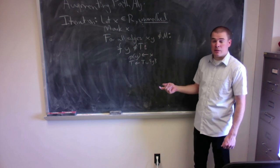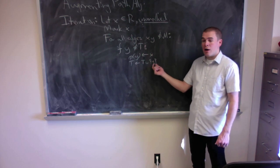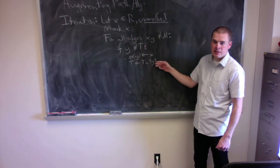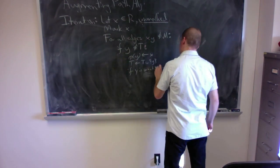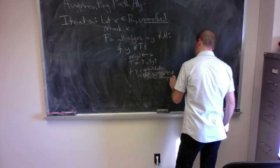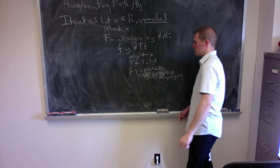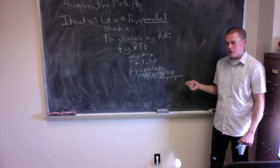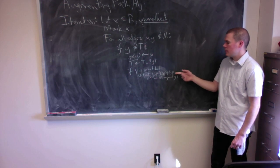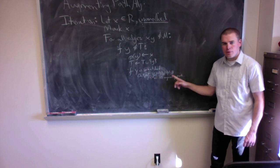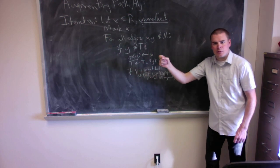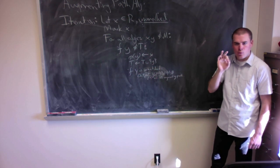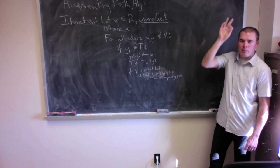Now I make some decisions: is y matched or not? If y is unmatched, I output all of the vertices found by following the predecessor relationship — start at y, go back to x, go to whatever y it came from, back and forth — tracing the full augmenting path.